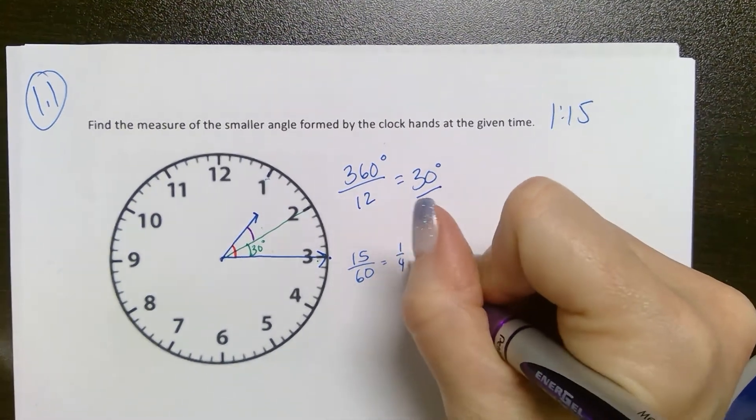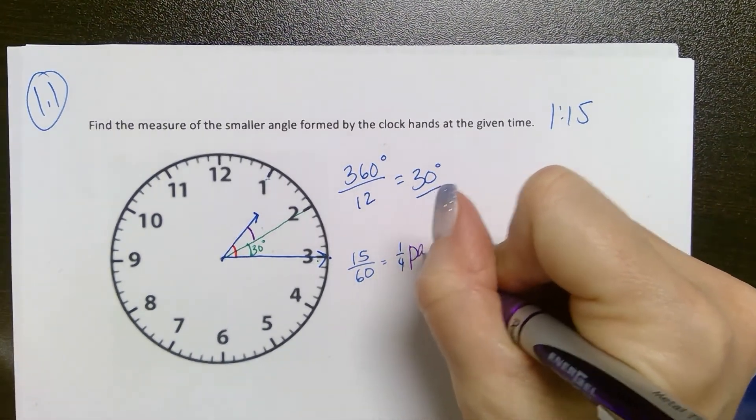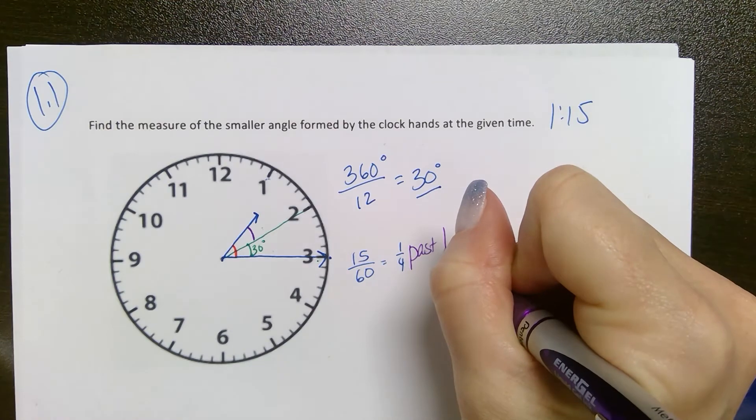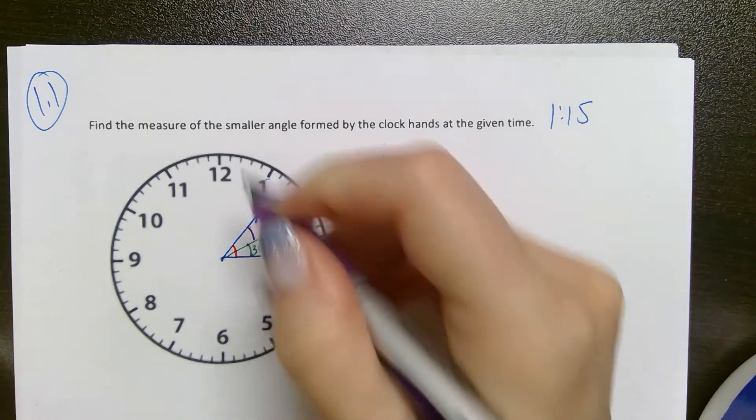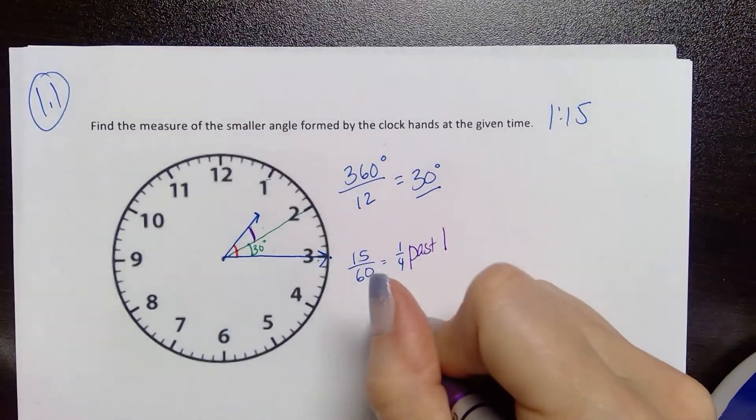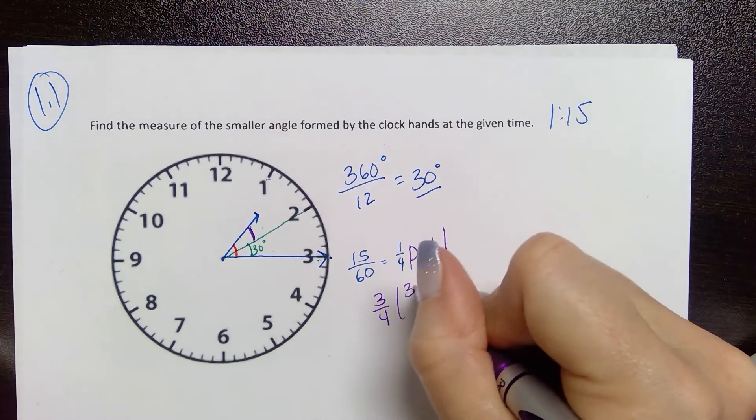So I've moved a fourth of the way past 1. So this remaining angle is three-fourths of 30 degrees.